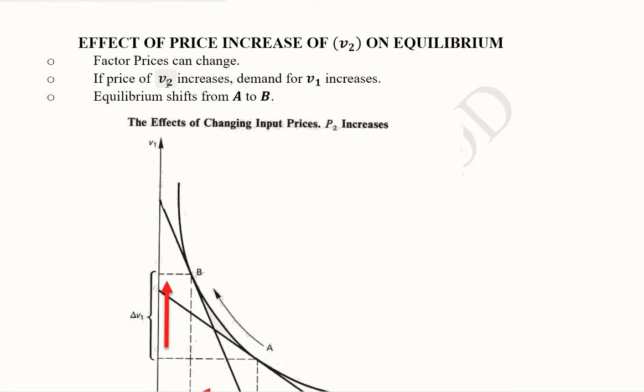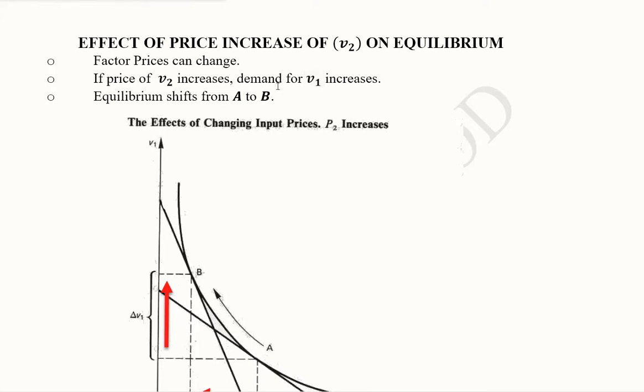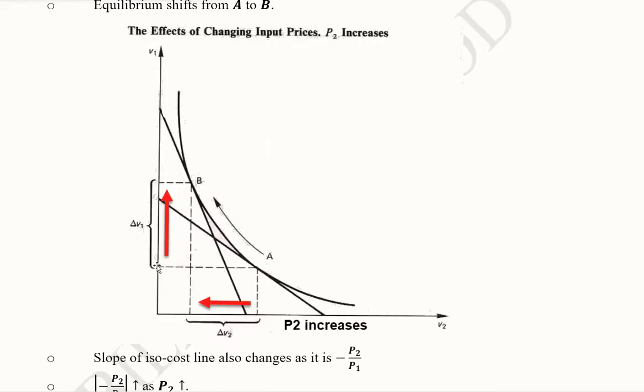Now if V2's price has increased, the demand for the other factor of production should increase because relatively it becomes cheaper for us. So the demand for V1 should increase and this is why we can see that this was the first point of equilibrium. This was the first level of input of V1 but now it has increased.